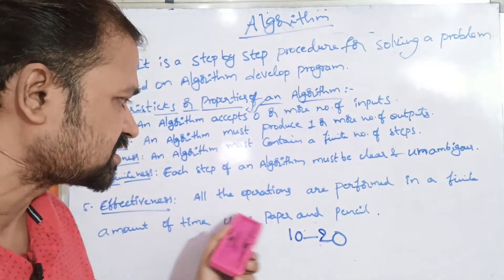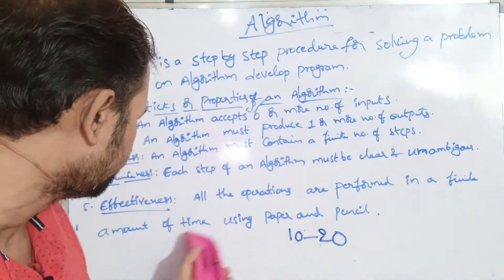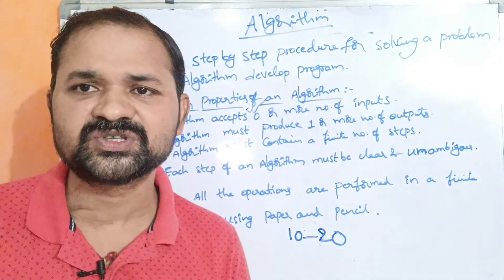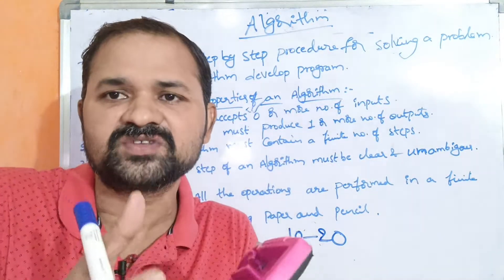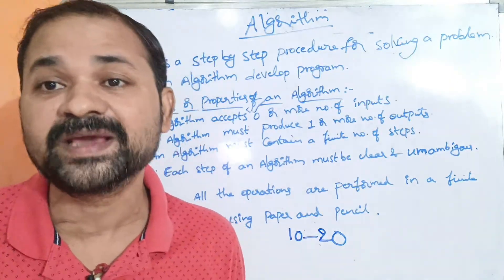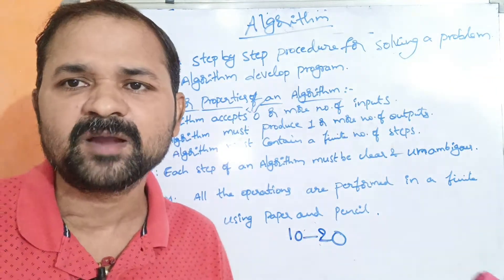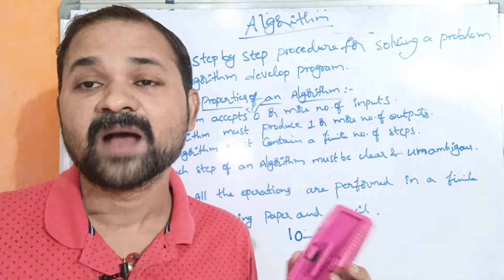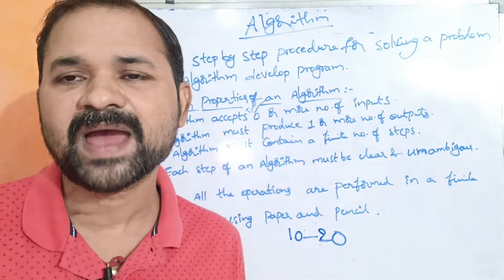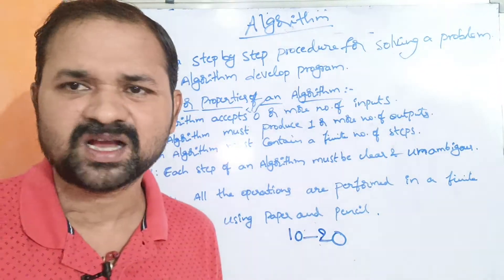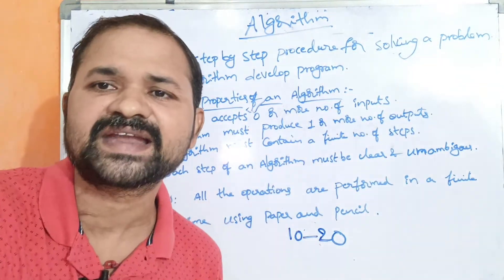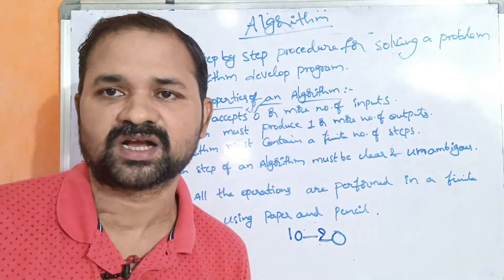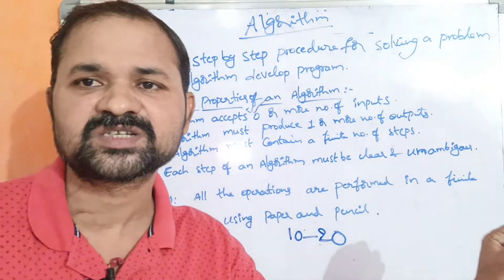The last property is effectiveness. All the operations in an algorithm must be performable in a finite amount of time using paper and pencil.